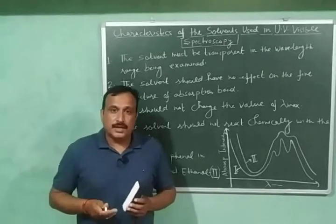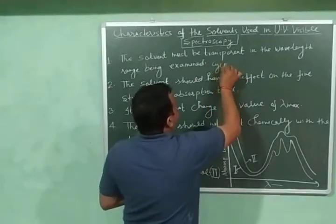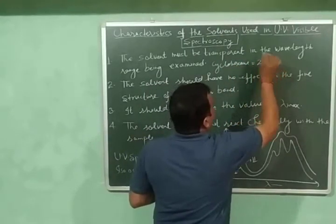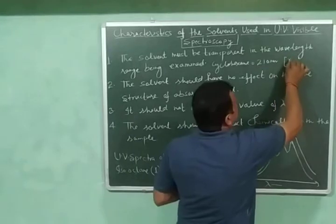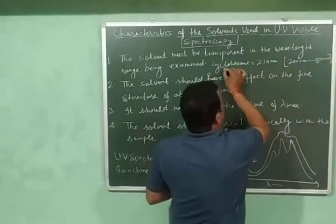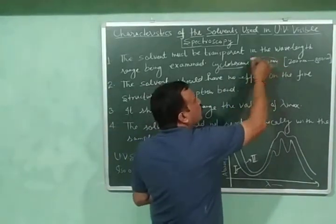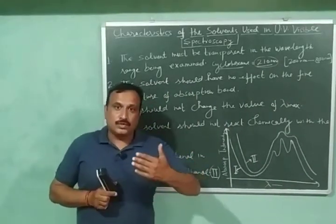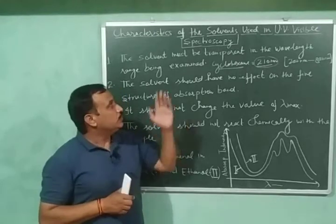For example, if I am using cyclohexane as a solvent, then for cyclohexane, the cutoff limit is 210 nanometers. And the UV visible range is from 200 nanometers to 800 nanometers. So the cyclohexane can absorb UV radiations up to 210 nanometers. But majority of our samples or organic compounds, they absorb UV radiations above this value.